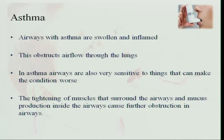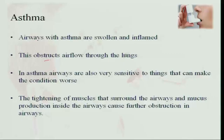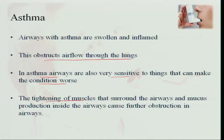In asthma, the airways are swollen and inflamed. The lumen of the airways becomes very small, making it very difficult for air to enter, and this obstructs airflow through the lungs. Asthma airways are also very sensitive to triggers that can make the condition worse. The airways are blocked, and any dust or irritant further aggravates the situation. Tightening of the muscles surrounding the airways and excess mucus production inside the airways causes further obstruction.